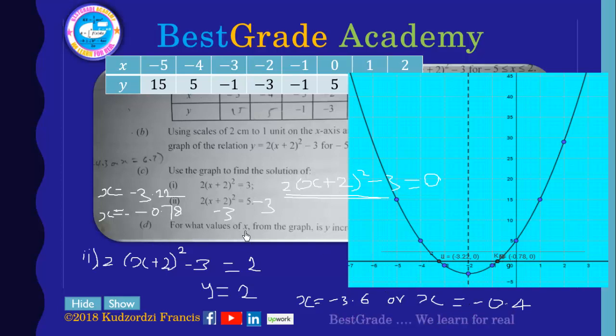Now the last part: for what value of x from the graph is y increasing in the interval? So this is the minimum point. So from this point up to this point the graph is increasing, so the x values are x is greater than negative 2.